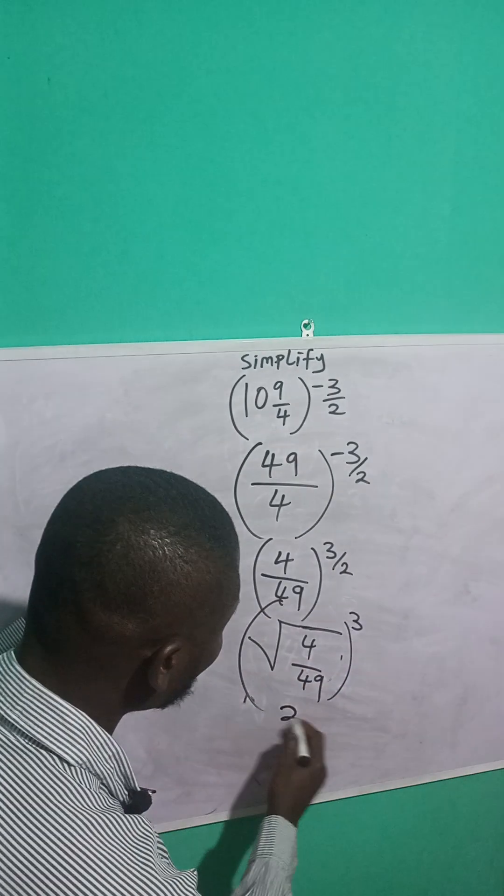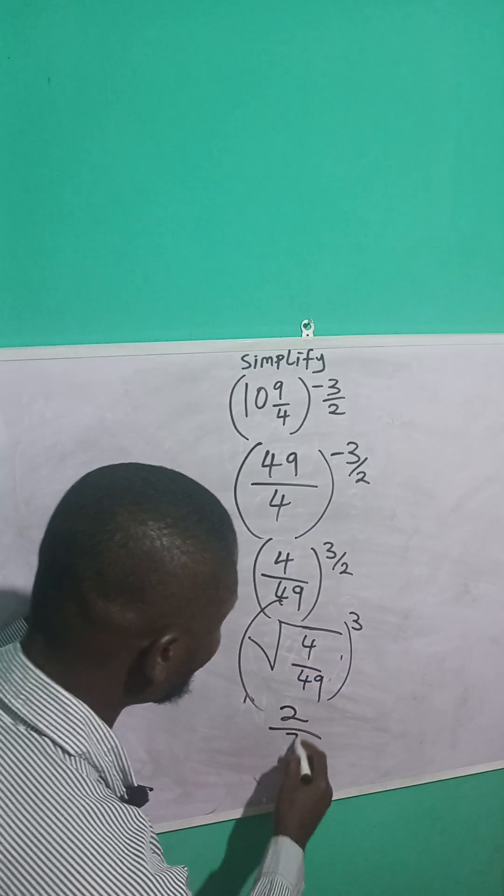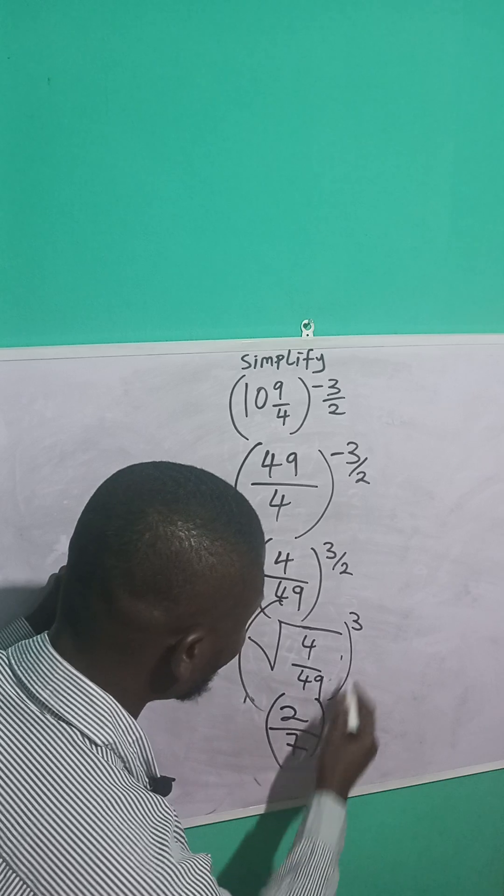Square root of 4 is what? 2 over. Square root of 49 is what? 7. All raised to the power of what? 3. Right?